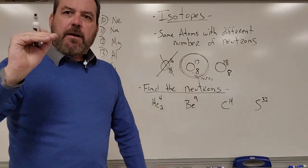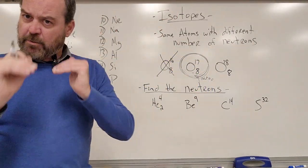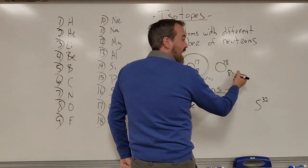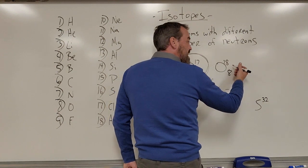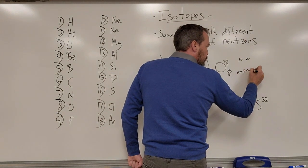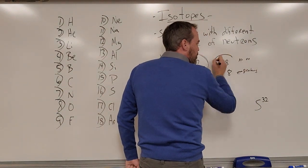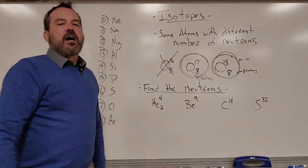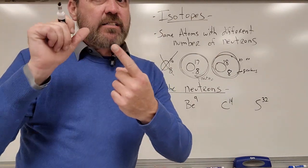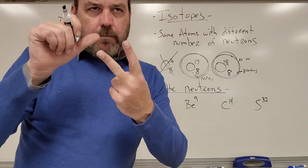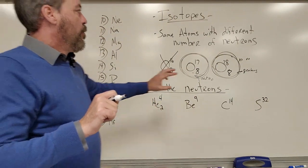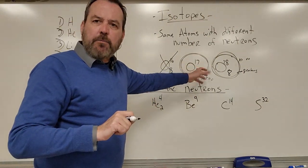For O-8-18: it weighs 18 Daltons, 8 of which are protons, leaving 10 neutrons. Since 8 and 10 are not the same number, this is also 100% an isotope. The key: same atomic number, different mass number — and we get that variance between the number of protons and neutrons.